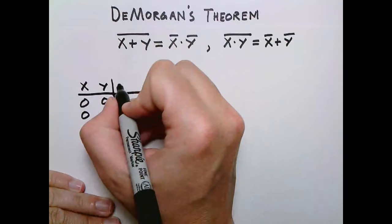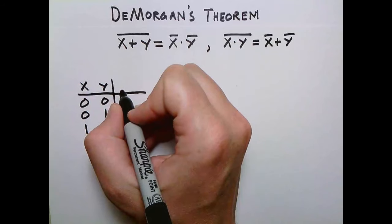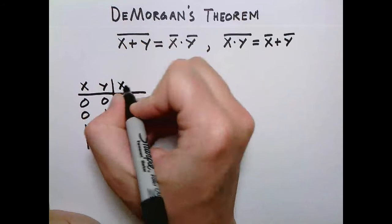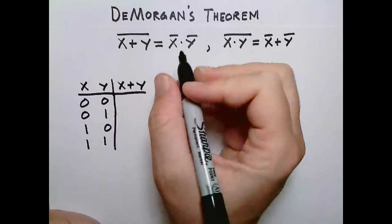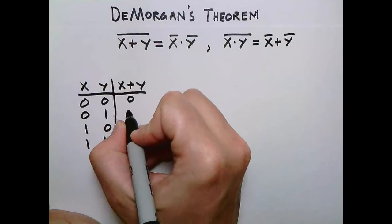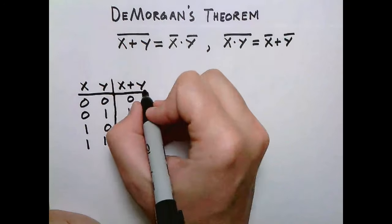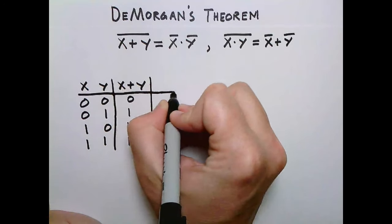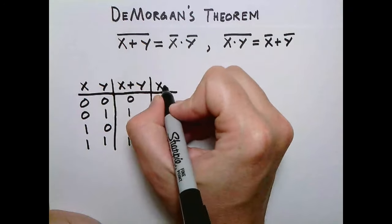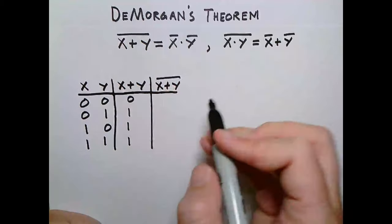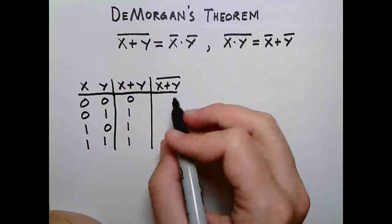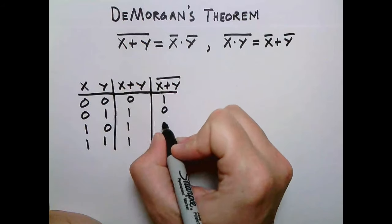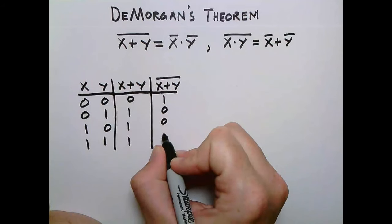And then we'll have, let's do x or y first. x or y, we should already know this one, it's going to be 0, 1, 1, 1. And let's do not x or y, and that's just going to be the inverse of this column, so it's going to be 1, 0, 0, 0.